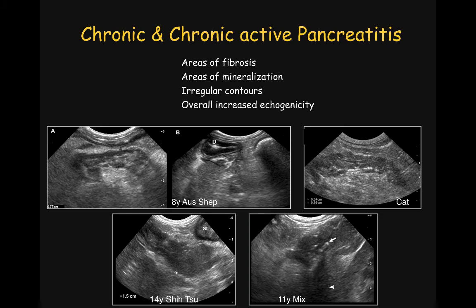Diagnosis of chronic or chronic active pancreatitis cannot be obtained based only on ultrasonographic features. However, several ultrasonographic features may be useful: areas of fibrosis, mineralization, irregular contour of the pancreas, and patchy or overall diffuse increase in echogenicity of the pancreatic tissue. In this first case of an 8-year-old Australian Shepherd, we see longitudinal and transverse sonograms of the right pancreatic lobe. The descending duodenum in cross-section indicates we are on the right side, and the pancreas is actually within normal limits for size at about 7.7 mm. However, we see changes in echogenicity.